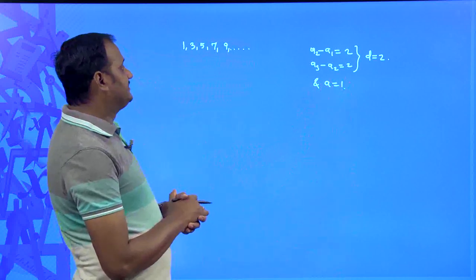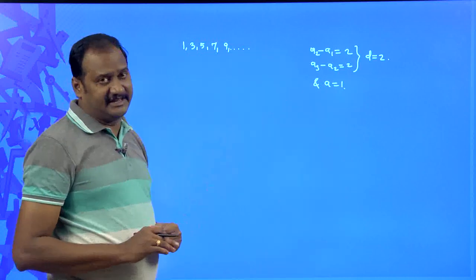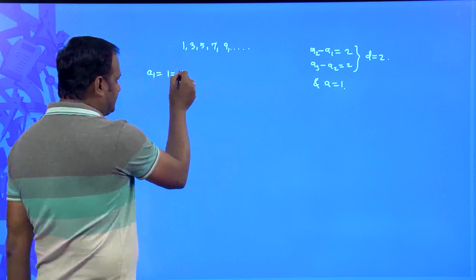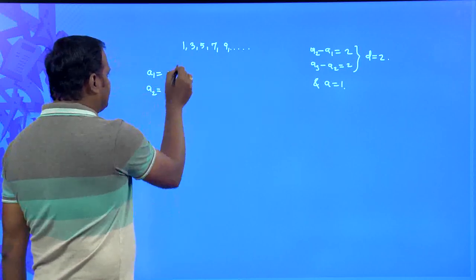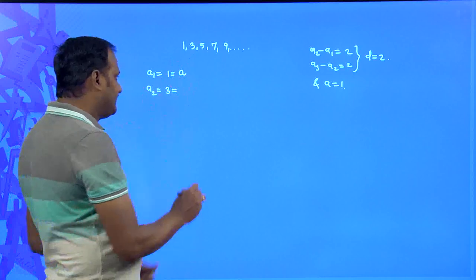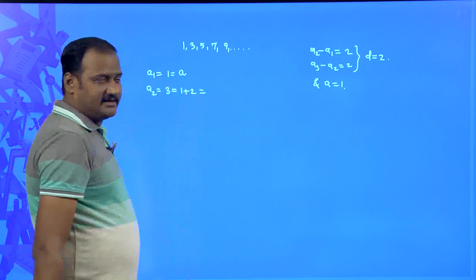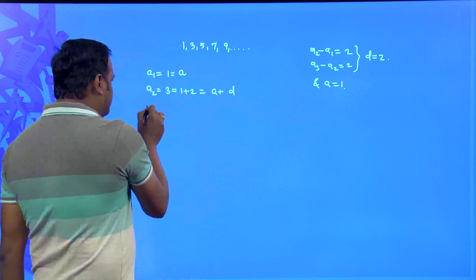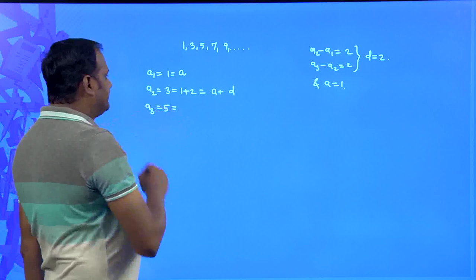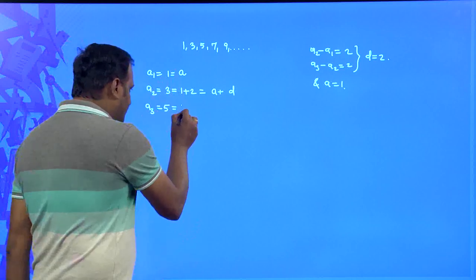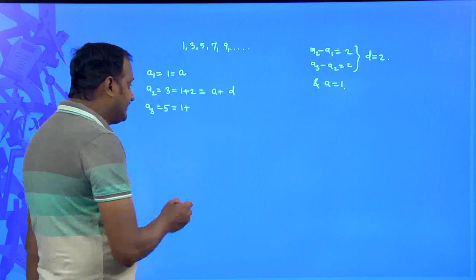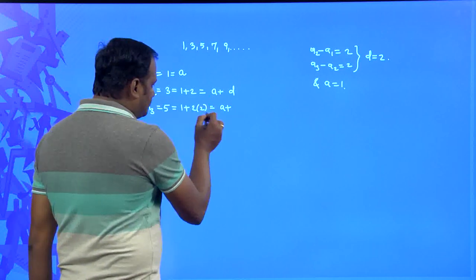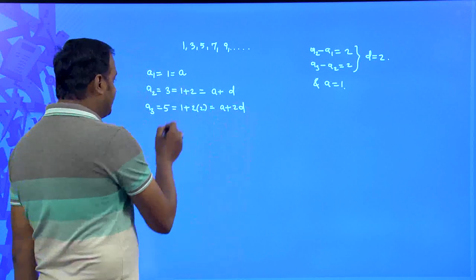Let me write this sequence in the general form using 'a' and 'd'. The first term a₁ equals 1, which is 'a'. The second term is 3, which equals 1 plus 2, so that is a plus d. The third term is 5, which equals 1 plus 4, or 1 plus 2 times 2, so that is a plus 2d. The fourth term a₄ is 7, which equals 1 plus 3 times 2, that is a plus 3d.